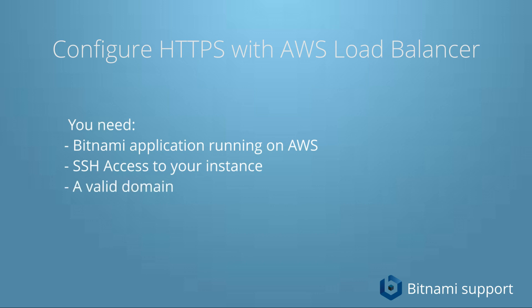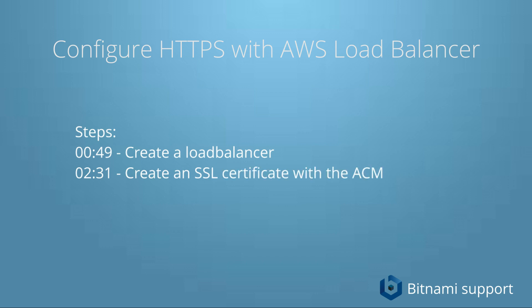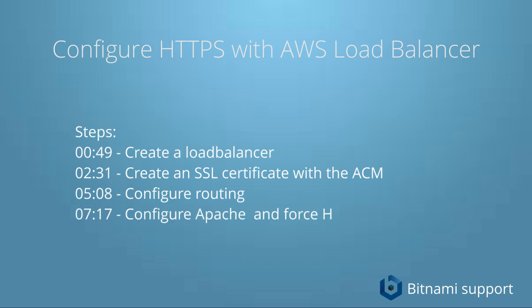These are the steps we will follow. We are going to create a load balancer in the AWS console. Then we are going to create an SSL certificate using the AWS Certificate Manager. Then we are going to configure the routing. And then we are going to configure Apache to use an SSL reverse proxy. And then we are going to check if it's working. So let's start.